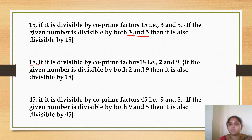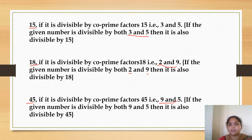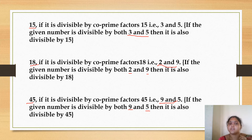Coming to 18: if a number is divisible by the co-prime factors of 18, that is 2 and 9, then it is also divisible by 18. For 2, the last digit must be a multiple of 2. For 9, it is the same as 3 — add all the digits and check whether the result is divisible by 9. For 45: if the number is divisible by co-prime factors of 45, that is 9 and 5, then it is divisible by 45. Unit's place must be 0 or 5 for divisibility by 5.